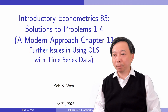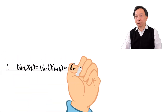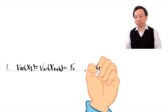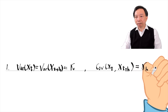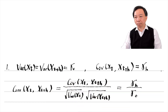Let's look at problem one. Xt is a covariance stationary process. We define gamma h as the covariance between Xt and Xt plus h, so that the correlation between Xt and Xt plus h is gamma h divided by gamma zero. Since X is a covariance stationary process, the variance of X is a constant, gamma zero, for all time periods. The covariance between Xt and Xt plus h is gamma h. Using the formula for the correlation between Xt and Xt plus h, we obtain the result.